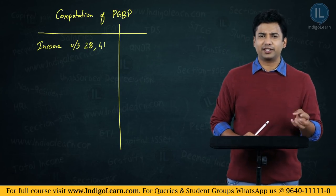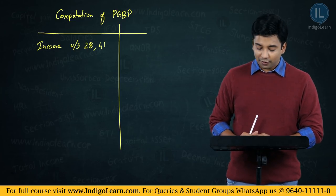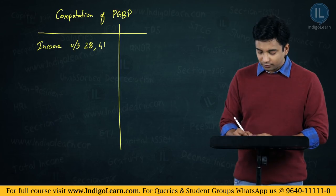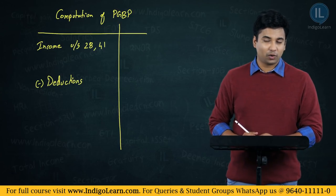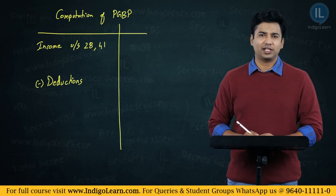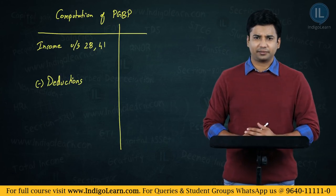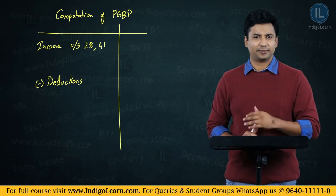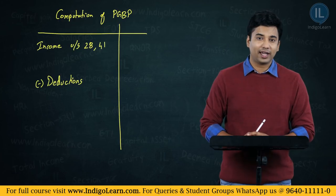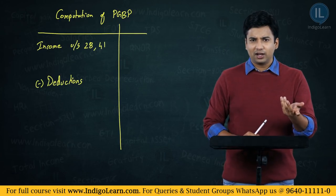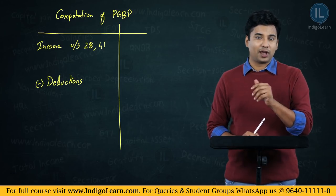What does the charging section say? It says these are the incomes that have to be included under the head PGBP. We are also going to learn what deductions are available against the income chargeable under section 28 and section 41. This term 'deductions' is something like expenditure, but all expenditure incurred and accounted will not be allowed as a deduction — there are certain specific rules.